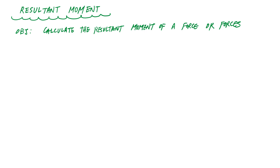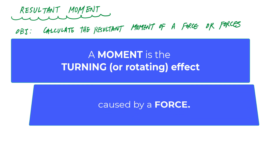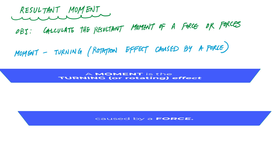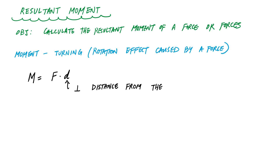The moment is the turning effect caused by a force. The magnitude of a moment is force times the distance, and D is the perpendicular distance from the force's line of action to the rotation axis.